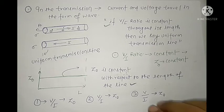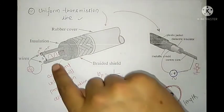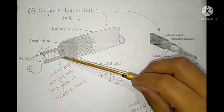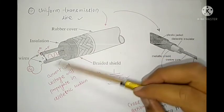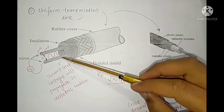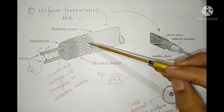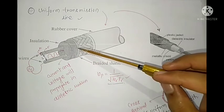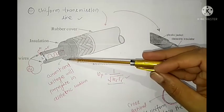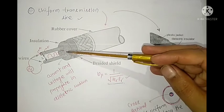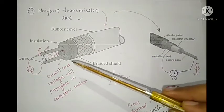Let's look at some examples of uniform transmission lines. Here, the cross-sectional area of both conductors is the same and the material is also the same, so it qualifies as a transmission line — it is a two-conductor system and wave propagation takes place inside the dielectric medium. This type of line is known as a covered parallel wire transmission line.